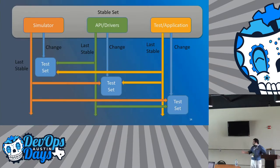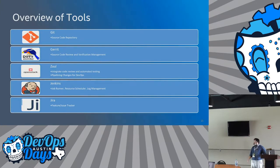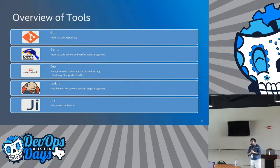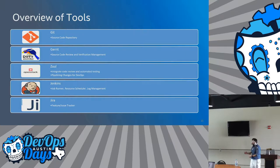For source code repository control we use Git. To handle code review and verification management, we have Zuul, which pipelines the code and helps with integration and testing from multiple repos. Jenkins also has features Zuul does — it allows taking triggers from Gerrit events and running jobs. We're using Zuul as the triggering event and Jenkins with pipelines and job runners to execute all our jobs.